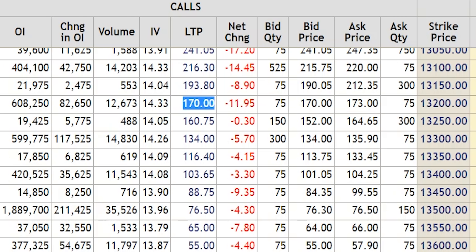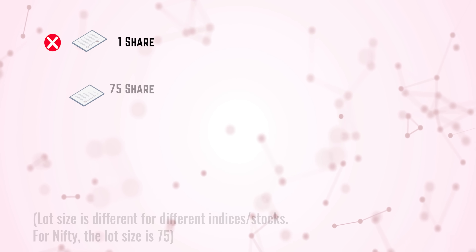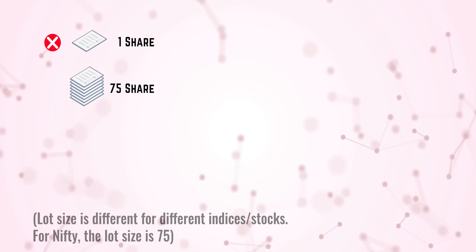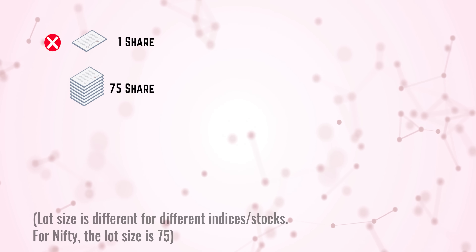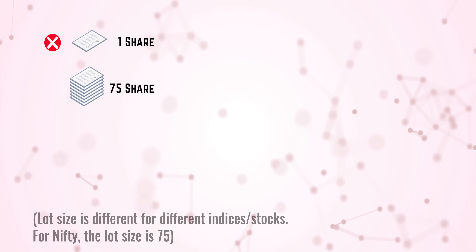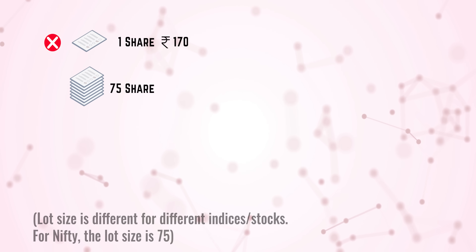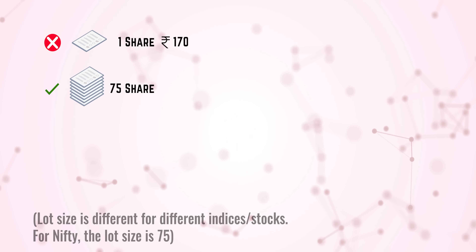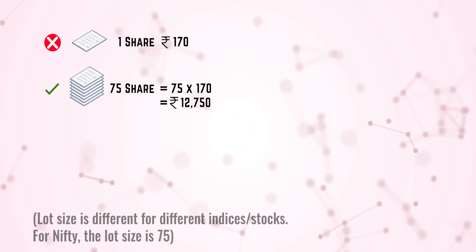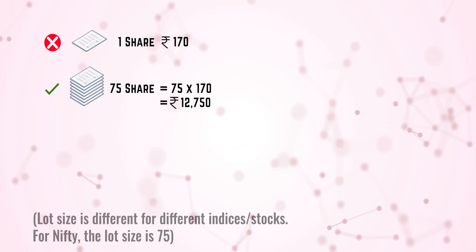One very important thing: in cricket you just do the betting. But here you cannot bet for one share — you have to do it for 75 shares, and that is called the lot size. We discussed about the lot size in the futures video — the same thing applies here. So 170 rupees means you cannot buy one share for 170 rupees; you have to buy 75 shares. So you have to pay 75 into 170, which works out to more than 10,000 rupees. So you have to buy in lots.